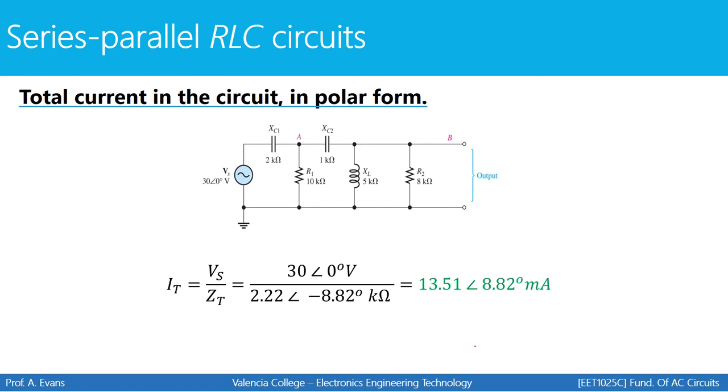We find the total current in the circuit using Ohm's law: VS divided by ZT.